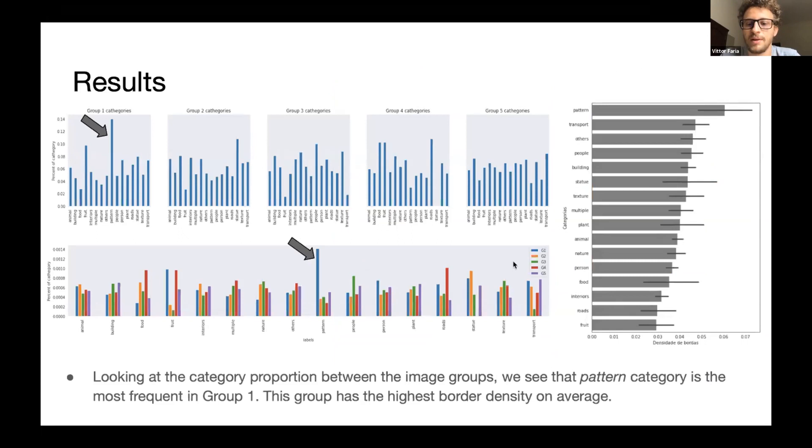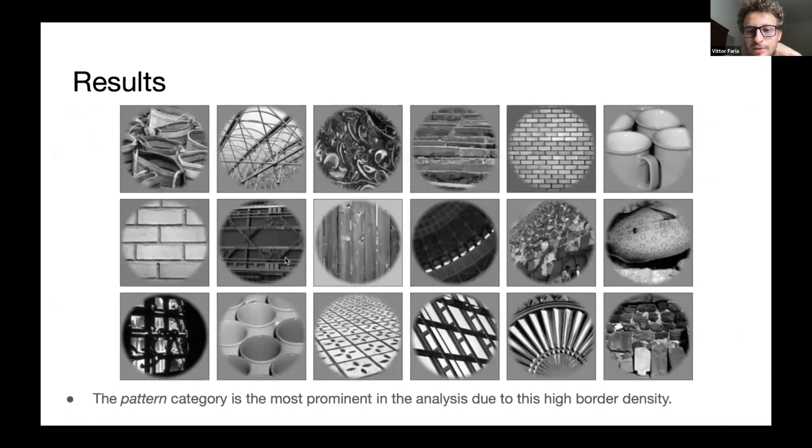We then made some comparisons between the images and we saw that the pattern group, we classified the images in categories of animal, nature, person, transport, people, building. And we saw that the pattern category, I'll show some examples later, is the one which has the highest mean border density of all the groups. And we also see that the same category has the higher proportion in the voxel groups, in the group one.